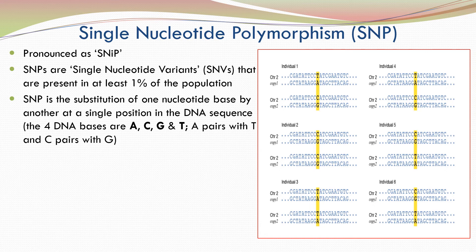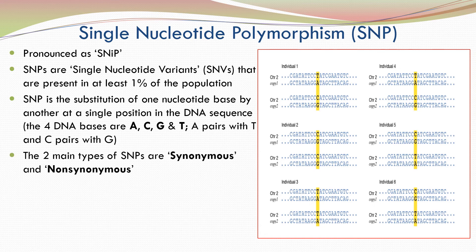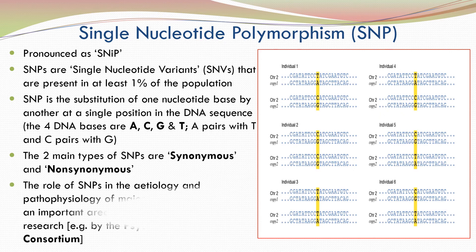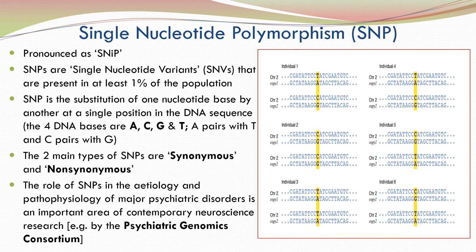As you may recall, the four DNA bases are adenine, cytosine, guanine and thymine. A pairs with T and C pairs with G. The two main types of SNPs are synonymous and non-synonymous. The role of SNPs in the etiology and pathophysiology of major psychiatric disorders is an important area of contemporary neuroscience research, for example, by international organizations like the Psychiatric Genomics Consortium.